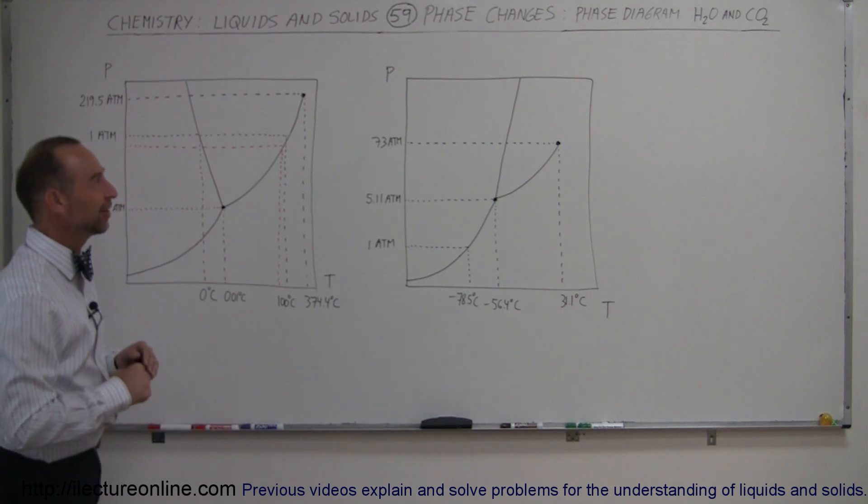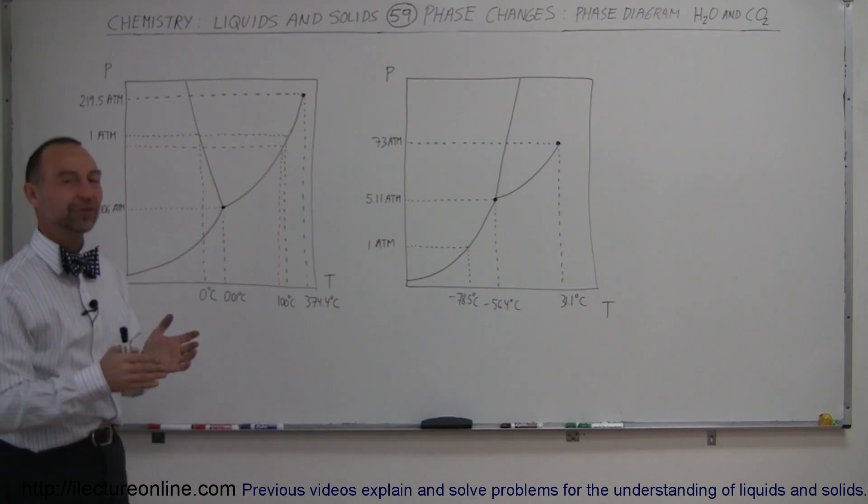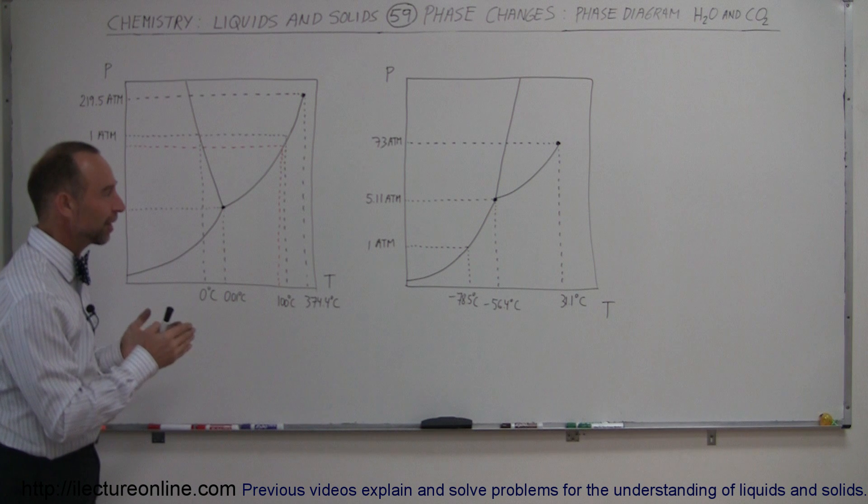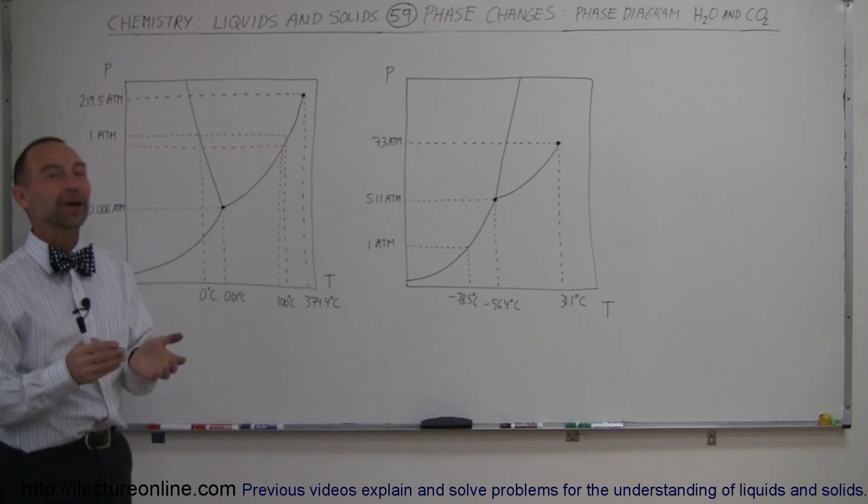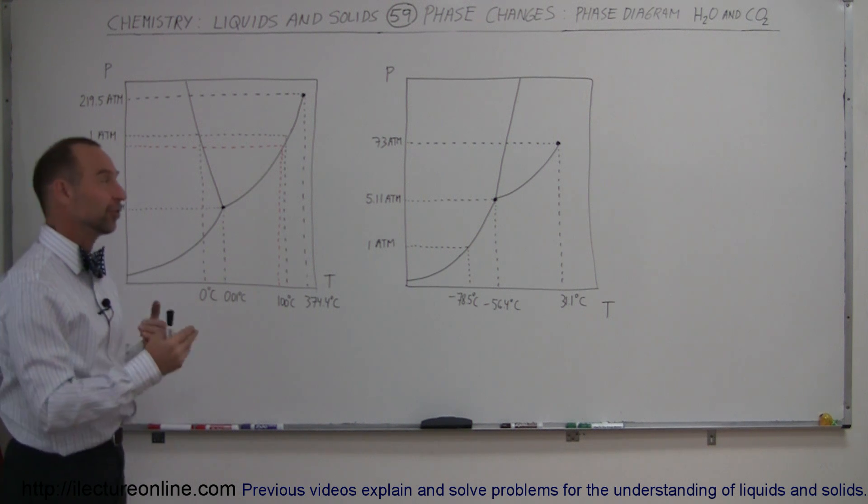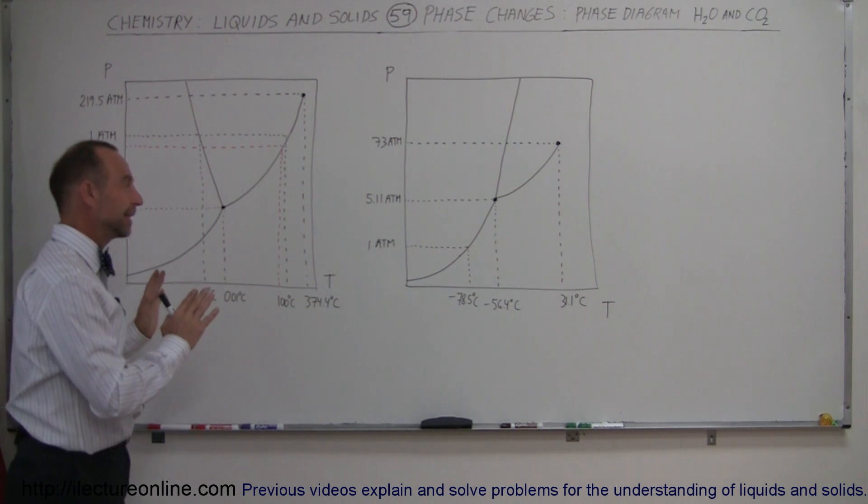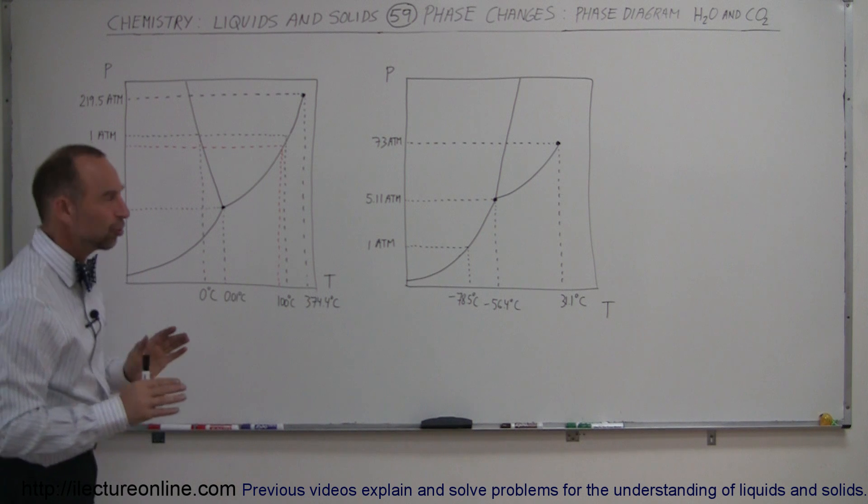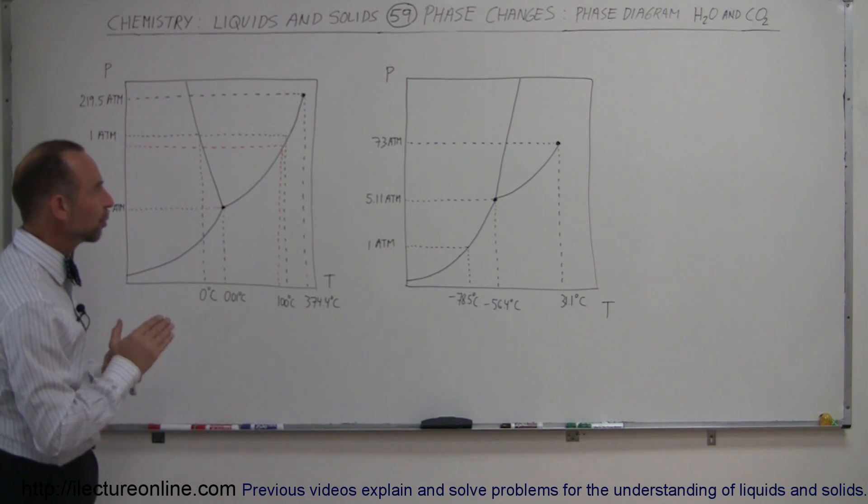Welcome to Electron Online and here are two phase diagrams, one for water and one for carbon dioxide side by side as comparison. Without labeling them, you should be able to tell the difference. The general shape is the same, but you should notice one basic difference between the two.